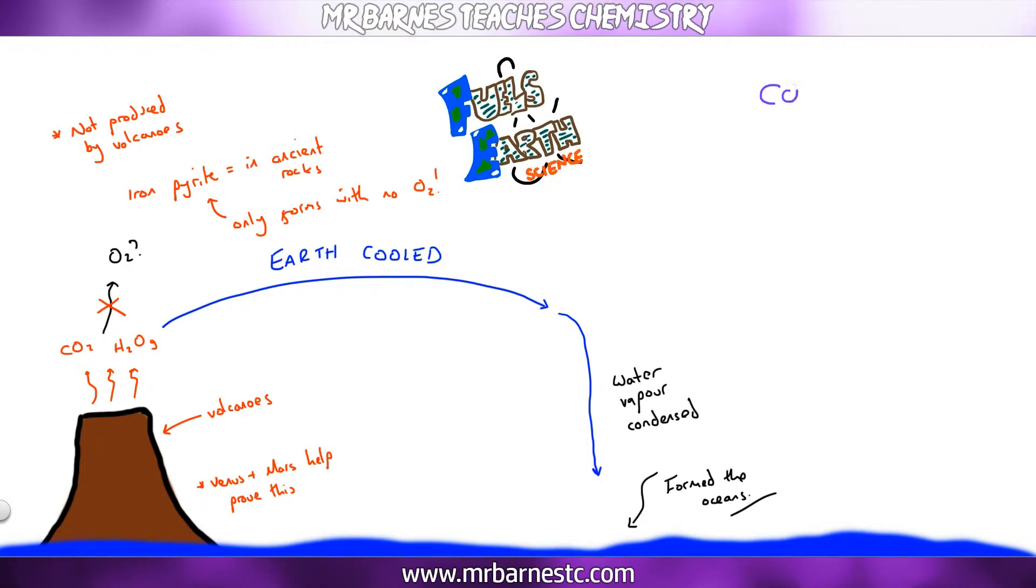What about carbon dioxide? Now in the early atmosphere it was around 90%. Now it's less than 1%. So how has it gone down? There are three ways you need to know. Number one, after the oceans formed the carbon dioxide dissolved into those oceans. So the percentage went down.